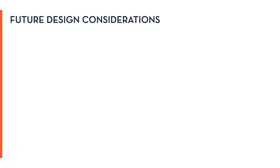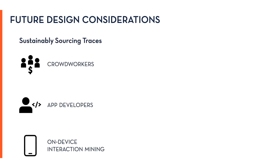A real-world deployment of Savant would require strategies for maintaining a repository of app traces, addressing potential security and privacy concerns, and expanding to platforms beyond the Android ecosystem. Relying only on paid crowd workers like Ricoh did for sourcing high-quality app traces would not scale. Therefore, we envision a future ecosystem where app interaction traces could be sourced in two additional ways: app developers could include sample interaction traces with their app updates, and traces can be mined directly from user devices through an on-device interaction mining app.